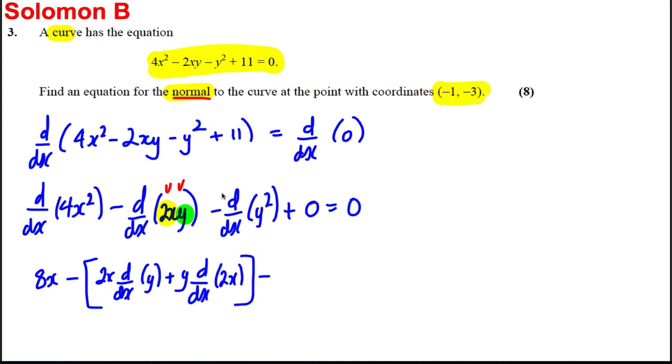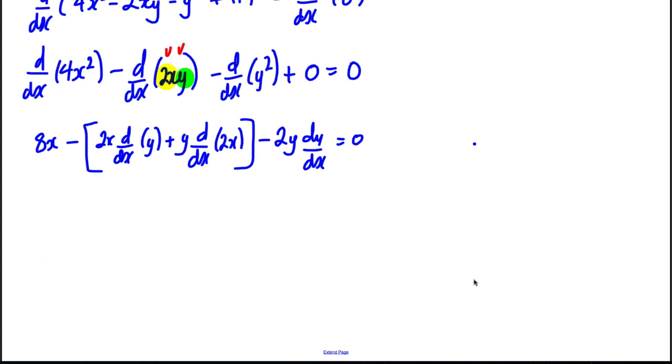And I'm going to differentiate this implicitly: differentiate with respect to y and times by dy/dx. It's going to be 2y dy/dx equals 0.